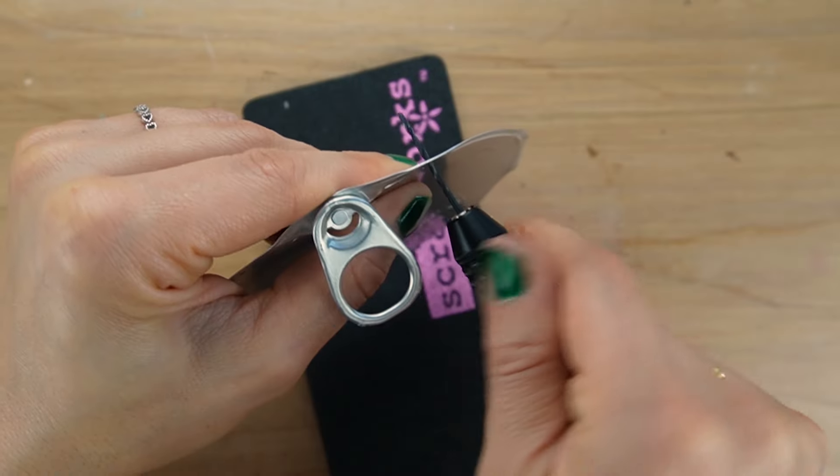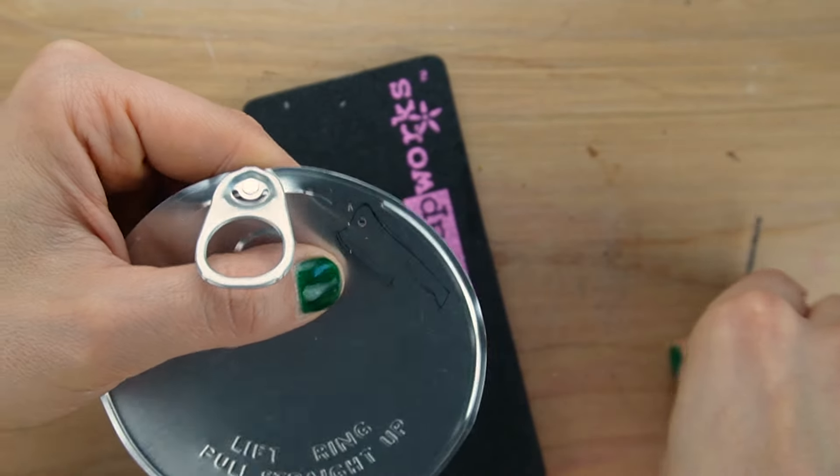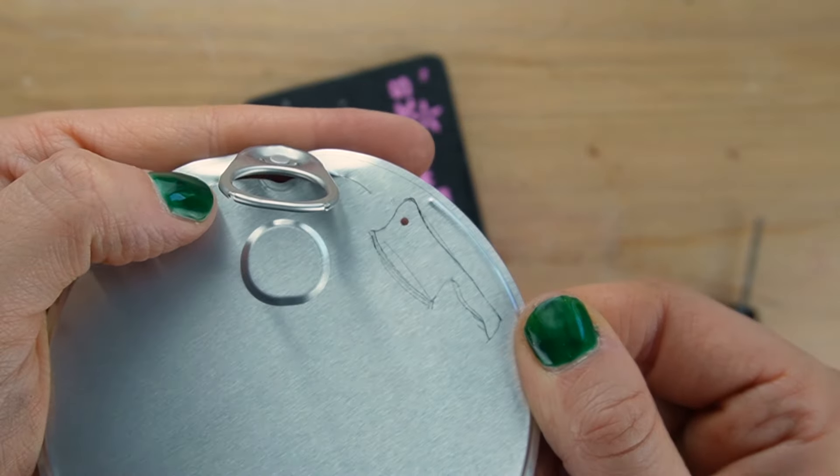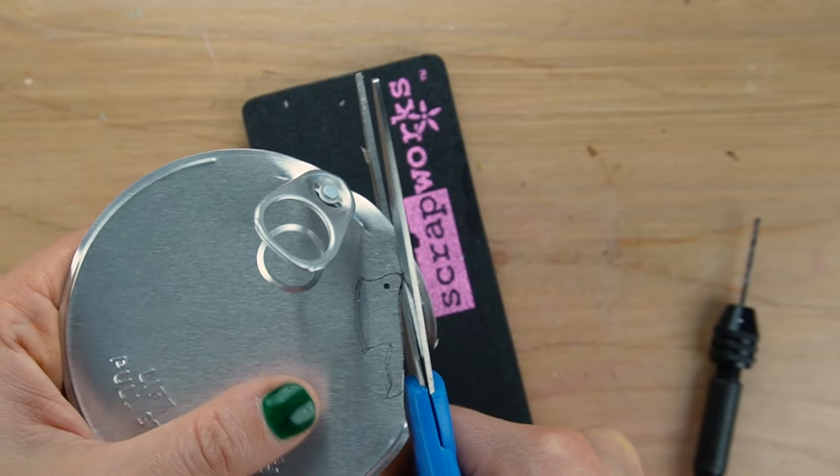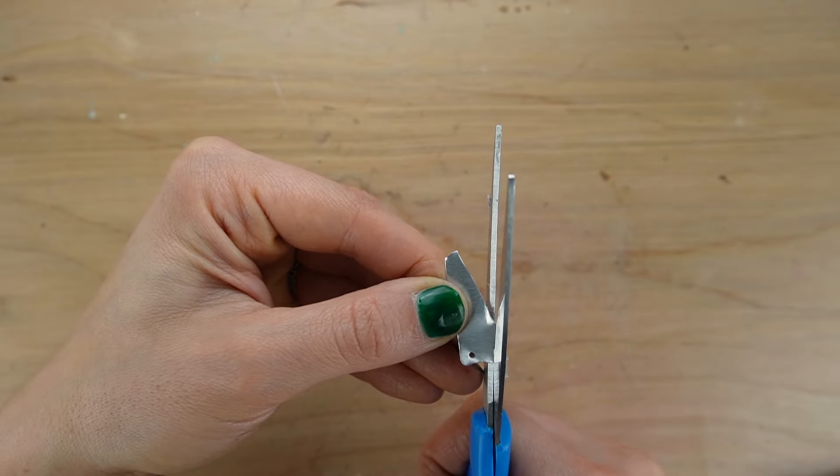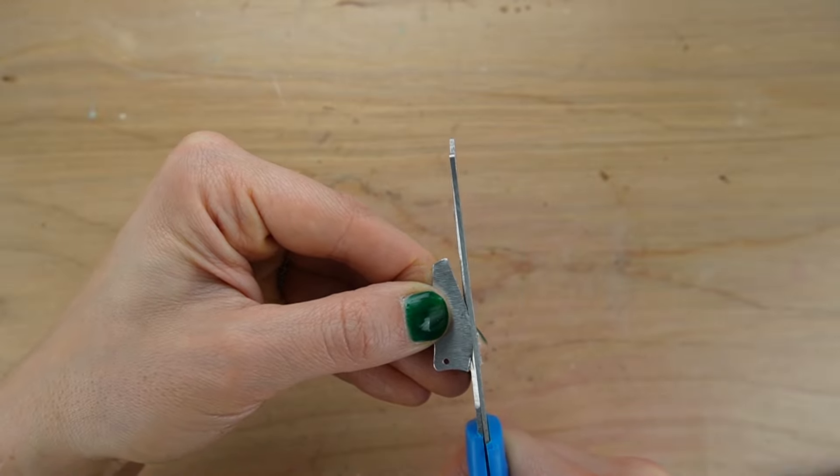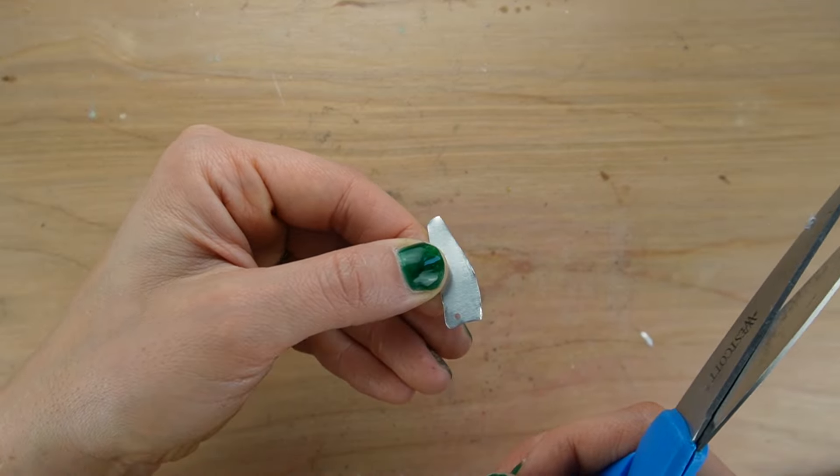This metal is sturdy enough to create a nice clean hole but not so hard that it's difficult to drill. You don't want to use your favorite pair but you can cut the knife out easily using scissors. I cut out the rest of the knife leaving excess so I can refine the shape once it's no longer attached to the lid.